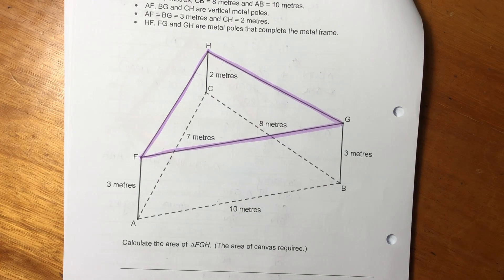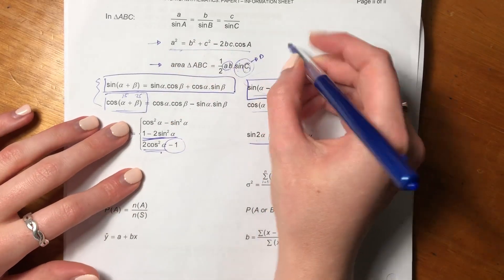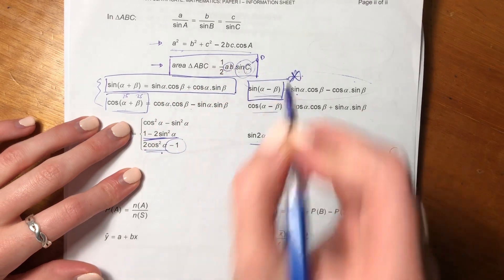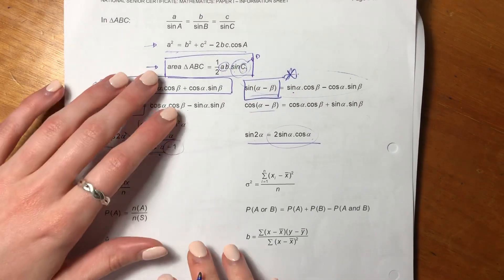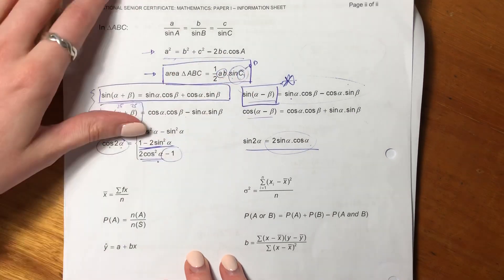So again, let's have our formula sheet on hand, and let's think about using this here. So this is the rule we're going to think of using. The area rule. So let's think about what sides we can use and what angle we're going to use.